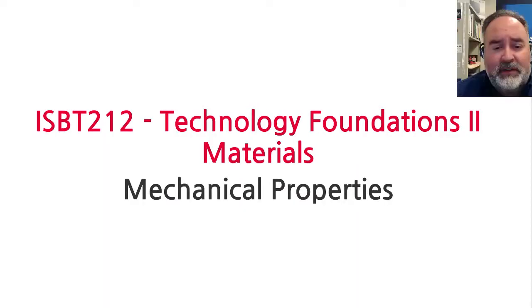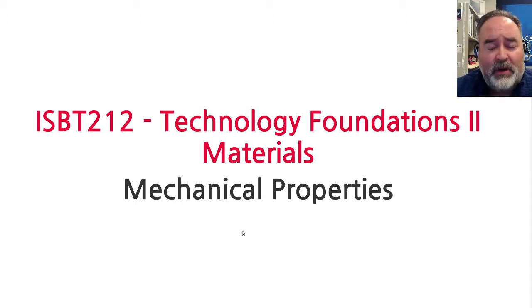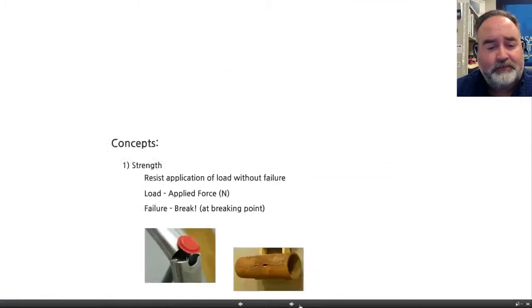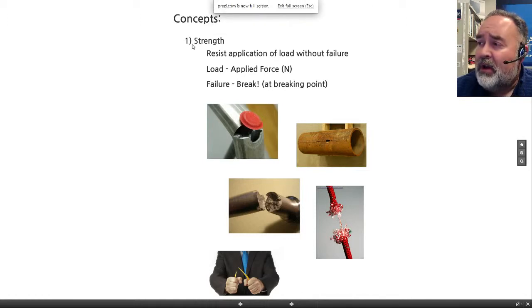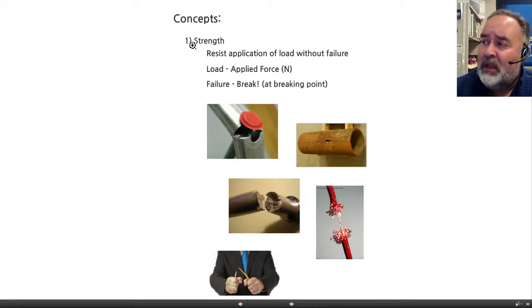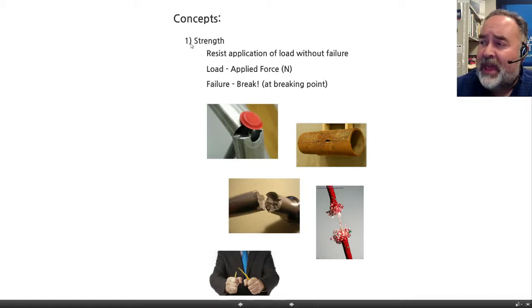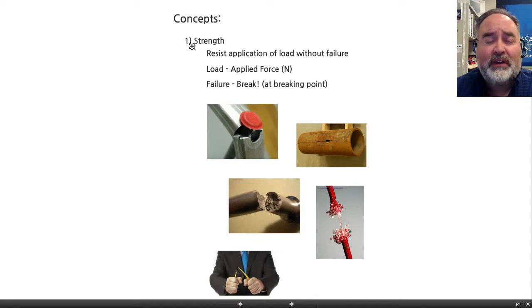Let me push a few buttons here and go over to our Prezi. And here we are — mechanical properties. We're just going to jump right into this list. Our first vocabulary word when referring to the mechanical property of a material is: how strong is it?